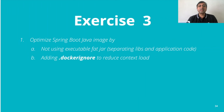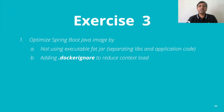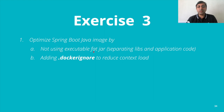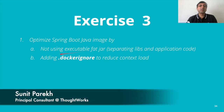As exercise three, optimize your Spring Boot Dockerfile: do not use an executable fat JAR — separate libs and application code into distinct layers — and also add a .dockerignore file to reduce the build context size.